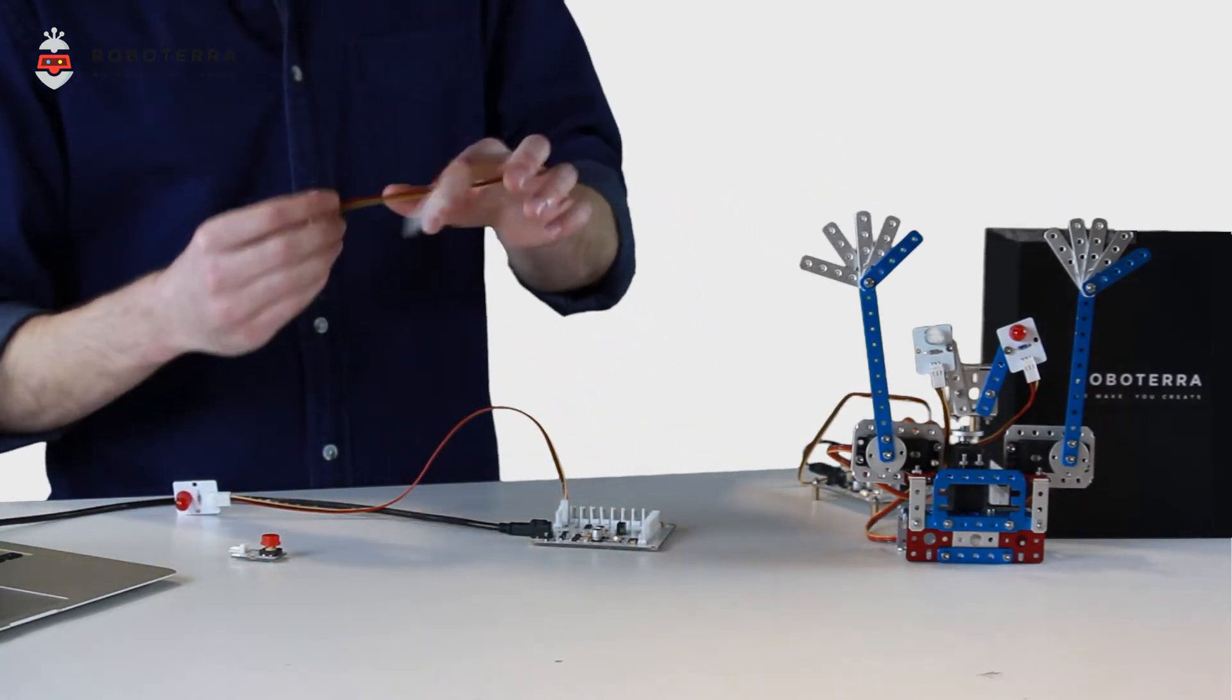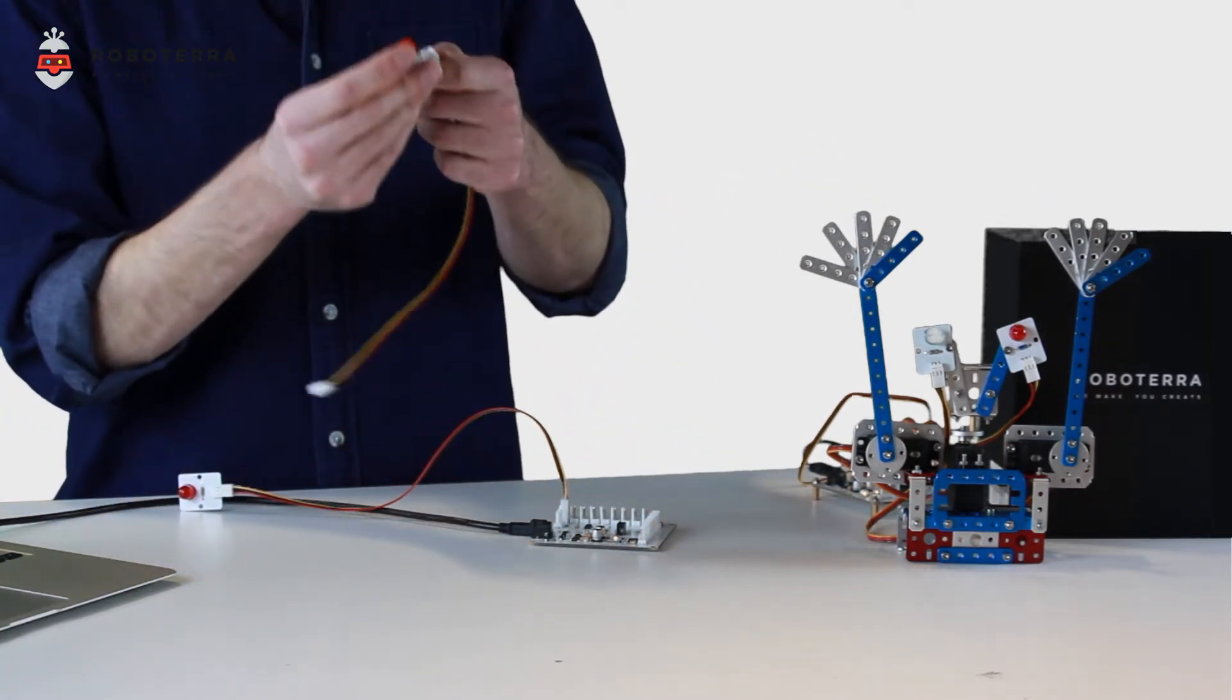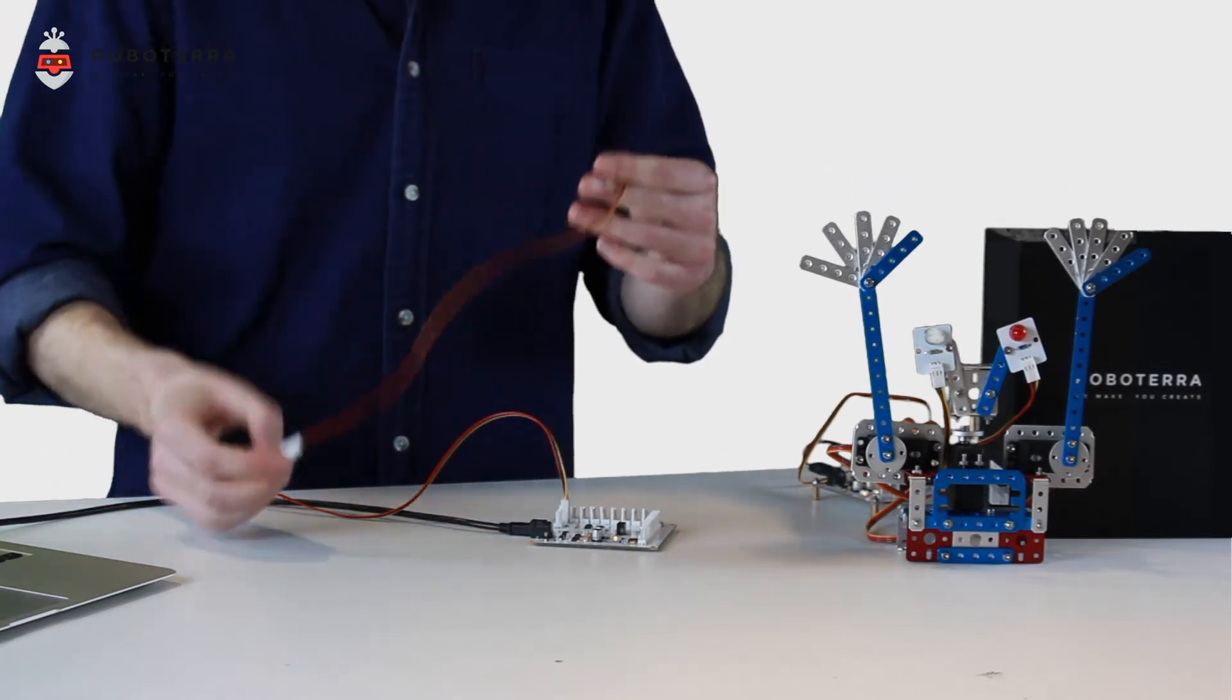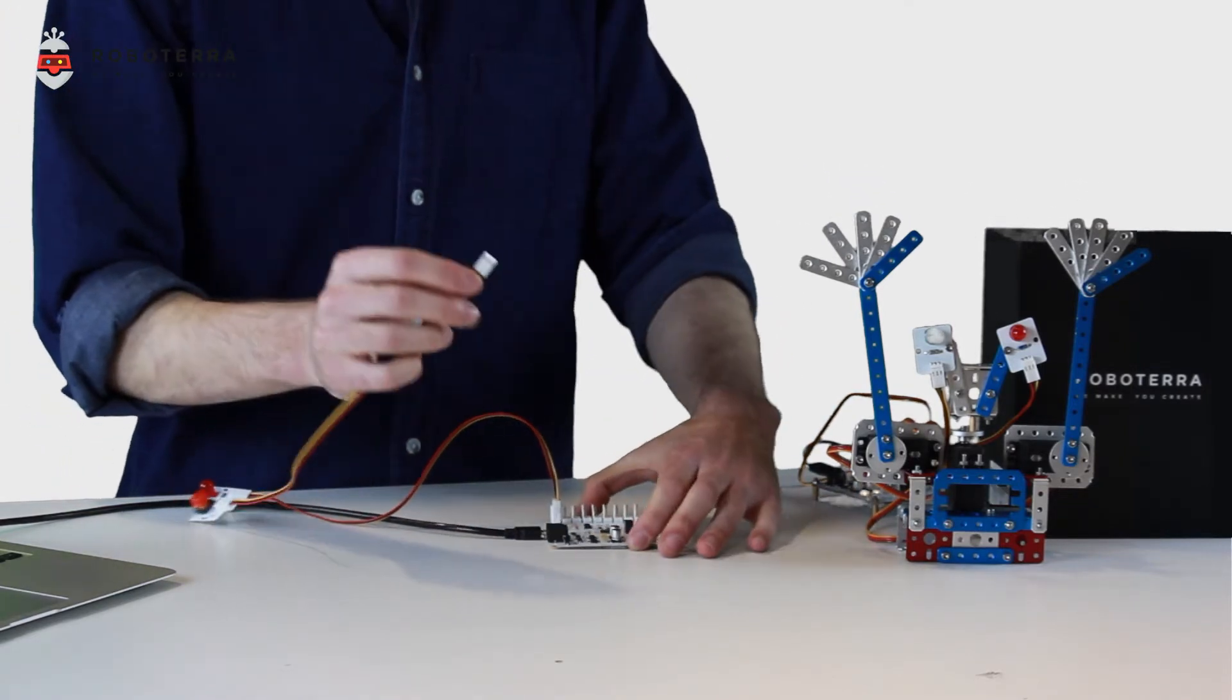I'll do the same with the other wire. One end goes into the button, and the other end into RoboCore, into DIO2.